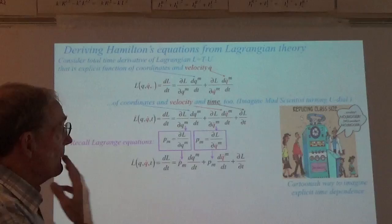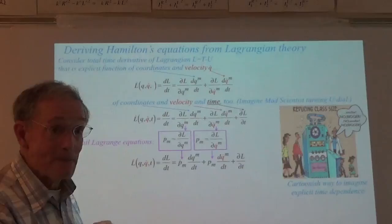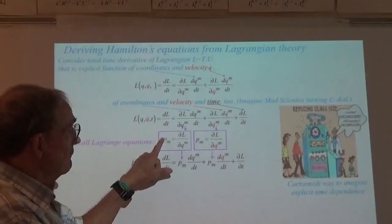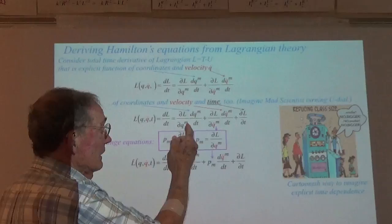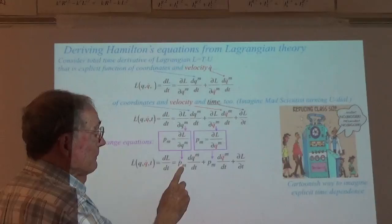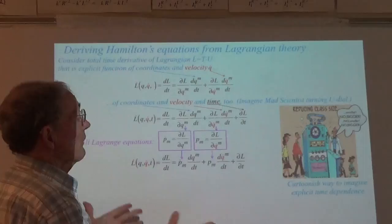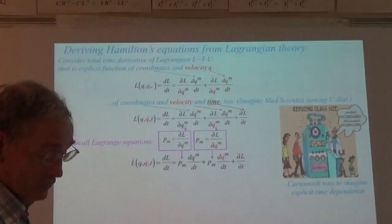We're going to put these variables into this partial derivative here with respect to the coordinate. That means I'm going to stick in a P-dot M here, and then using the partial derivative with respect to Q-dot, that is P without a dot. With this technique, we do get an equation that is Hamilton's equation. We also get the Poincaré relationship.